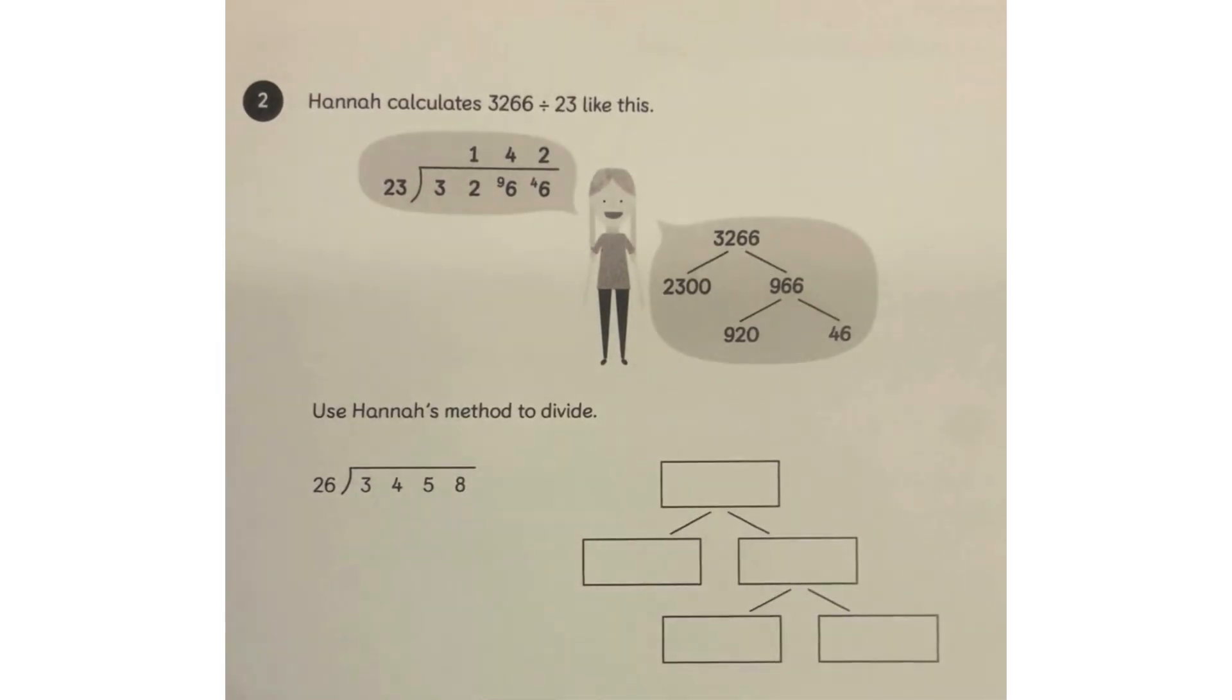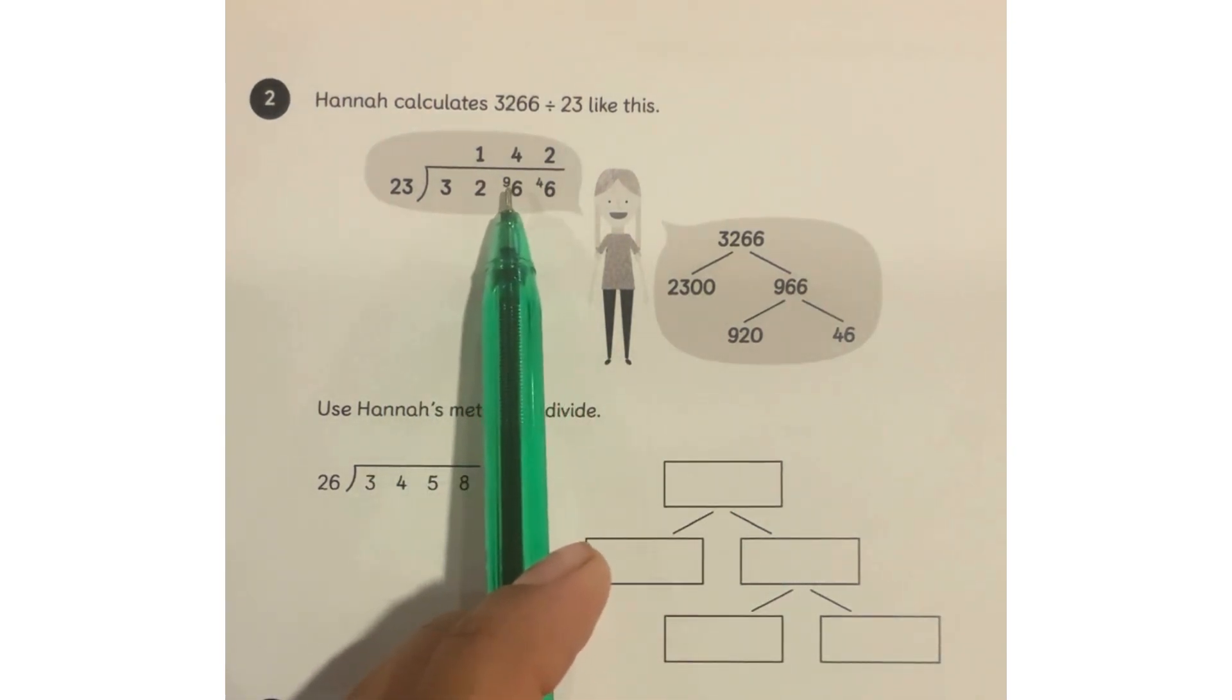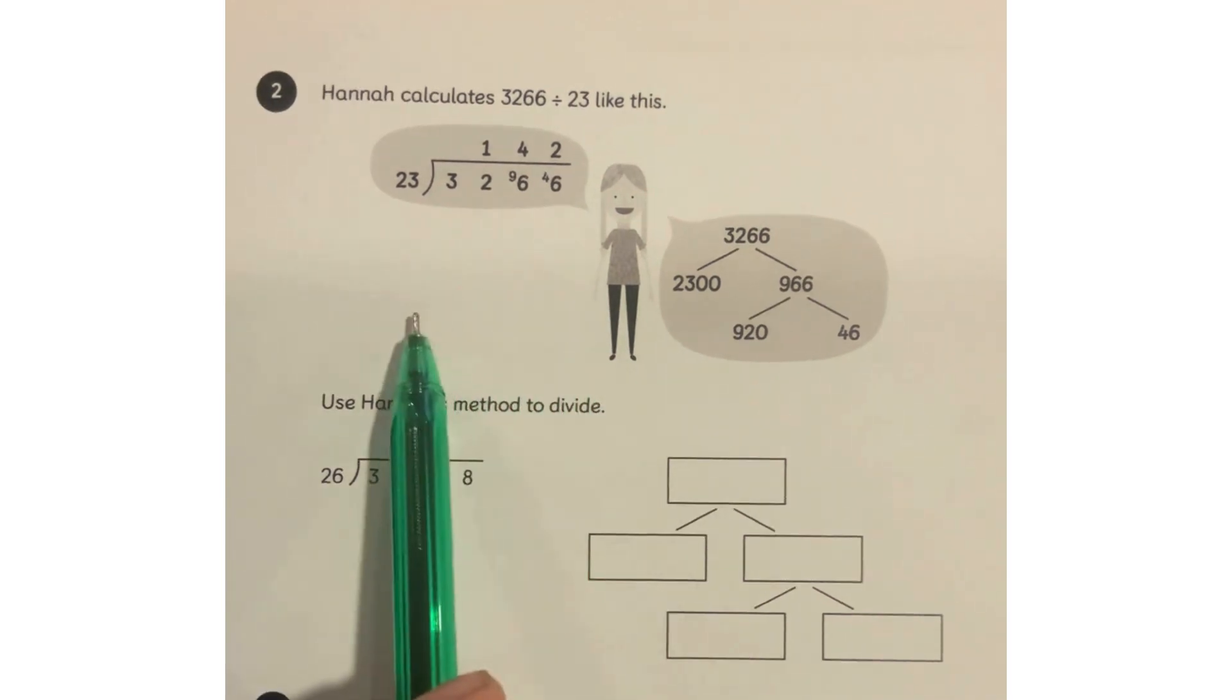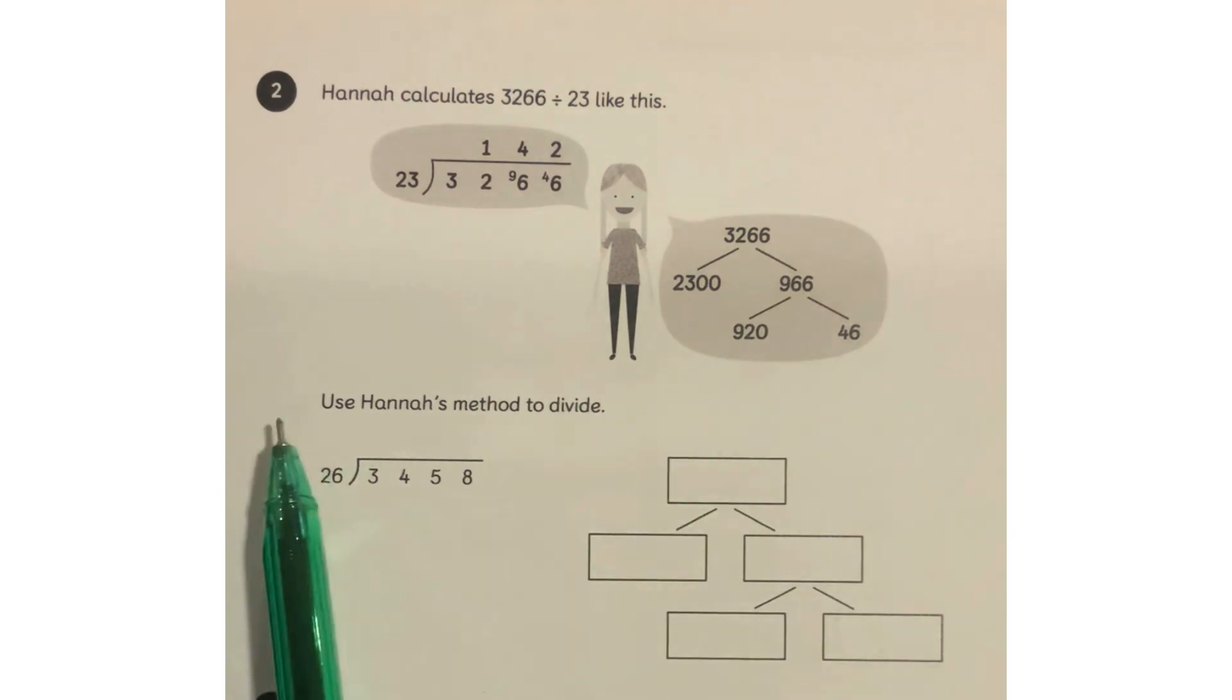Welcome to Element Z3. Let's do part 2 of the same worksheet. Hannah calculates 3266 divided by 23 like this. As you see, she is doing the carry-over method. Nothing is brought down, but the partition is the way it is. So we will use Hannah's method to divide. As we see, the grid is already here.